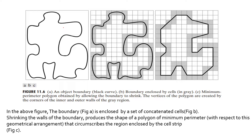Let us discuss a general way in which we can obtain a minimum parameter polygon. Consider figure 1 — this is a boundary of an arbitrary shape. In figure 2, we have surrounded the boundary with a set of concatenated cells and colored those cells which enclose the boundary completely with grey color. In order to obtain a minimum parameter polygon, let us consider the original boundary as a rubber band and allow it to shrink along the inner and outer walls of the light grey boundary. As it is constrained to shrink along the inner and outer walls, the polygon we get by the process of shrinking will be of minimum parameter.